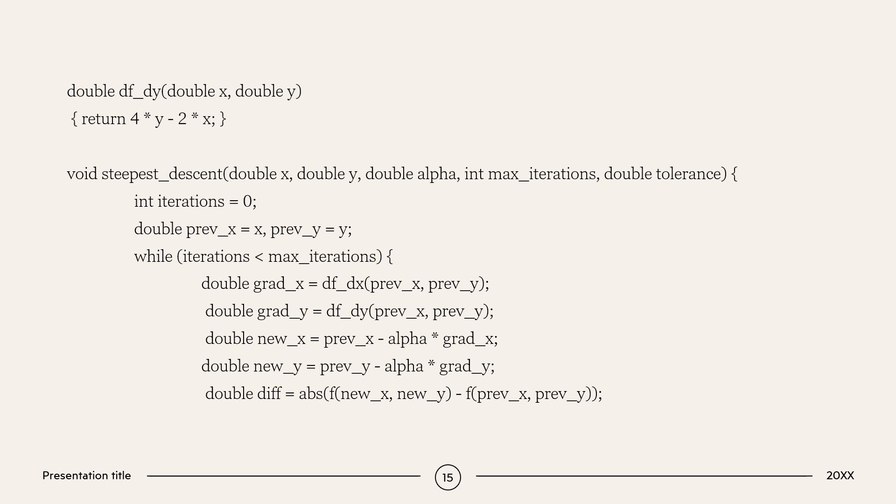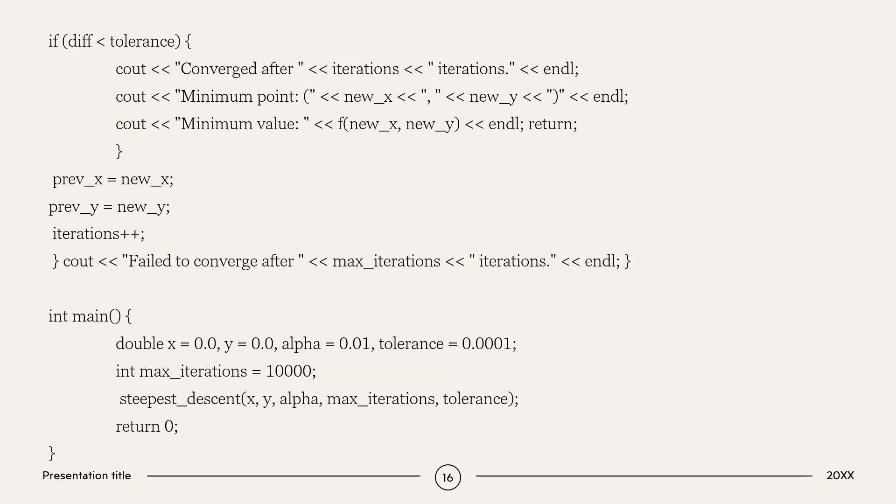First, initially we have set iterations equal to 0 and previous value of x equal to x and previous value of y equal to y. While iterations are less than maximum iterations. That means, here we are fixing the maximum iterations that we have to reach. So, until we reach the maximum iterations, these while loops goes on. So, gradient, we are finding the gradient. Partial differentiation with x, partial differentiation with y. And we are updating the value of x and y. And finding the value. That's it.